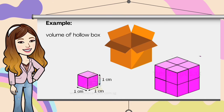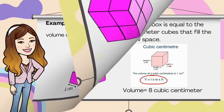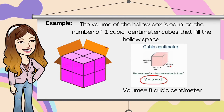For example, we are going to find out the volume of a hollow box. We are going to use the cubic centimeter. The volume of the hollow box is equal to the number of one cubic centimeter cubes that fill the hollow space. The volume of this hollow box is equal to eight cubic centimeters.